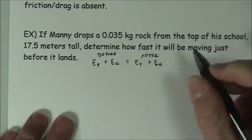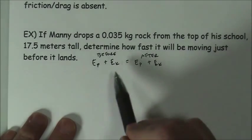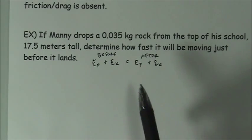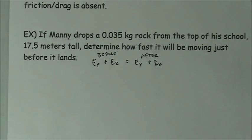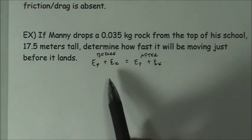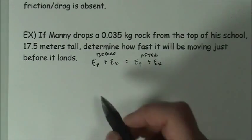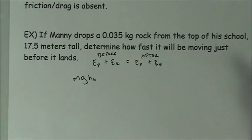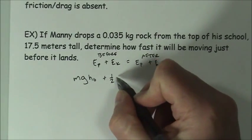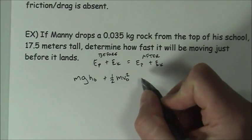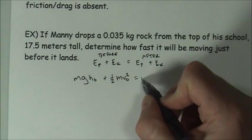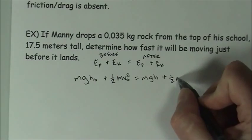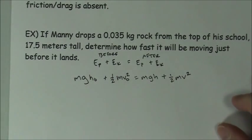This should remind you a little bit of the conservation of momentum law. We look at the total amount of mechanical energy before, which is in the form of both kinetic and potential, and we look at the total amount of potential and kinetic after, and according to the law of conservation of energy, those two must be the same. So if we fill in what these equations look like, this would be MGH, the initial height, plus one-half MV naught squared. That must be equal to MGH, the final height, plus one-half MV squared.